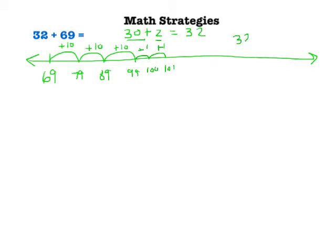So 32 plus 69 equals 101. I'm going to solve the problem again using the same tool, the number line, but a different strategy.